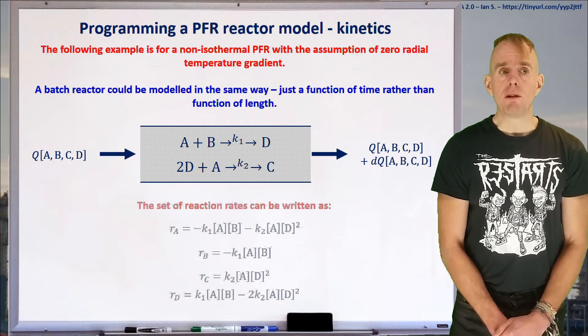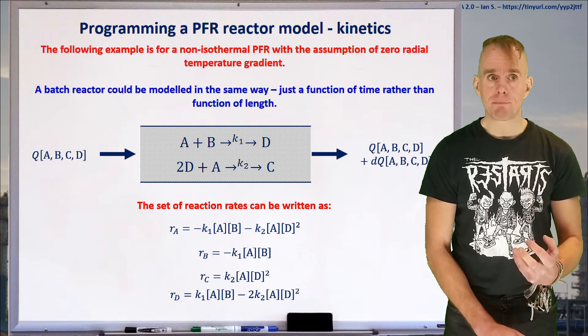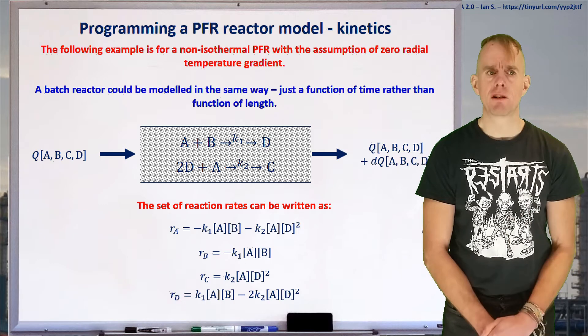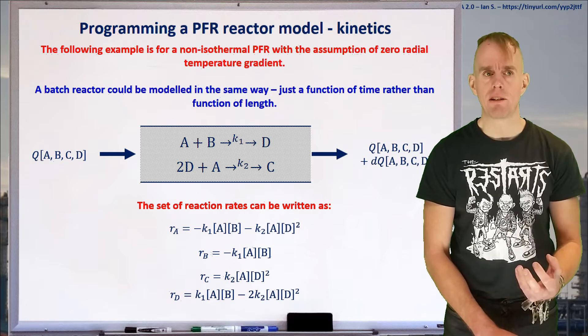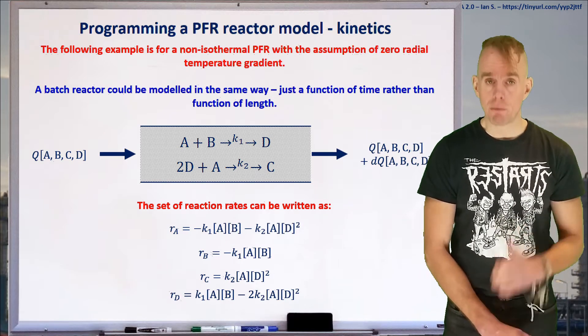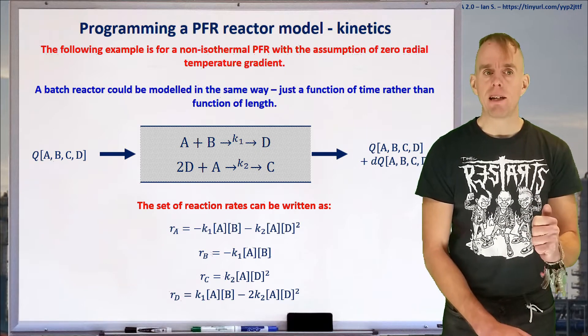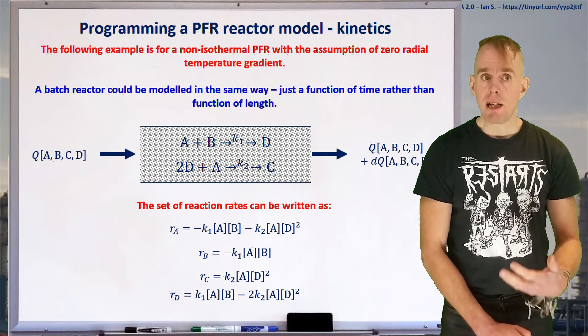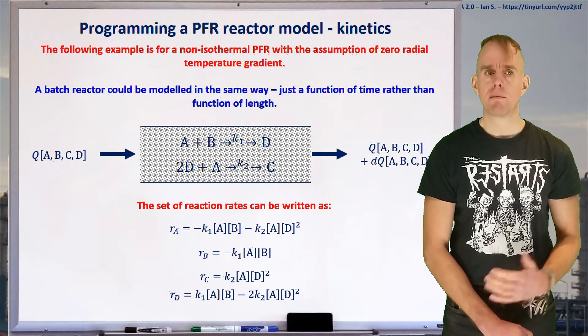The first thing we're going to do is write down the rate equations for each species. If we consider species A, it's consumed in reaction 1 and reaction 2, so the rate of consumption is -K1AB - K2AD². D squared because we've got one mole of A reacting with two moles of D. For species B, it's only consumed in reaction 1, so the rate is -K1AB.